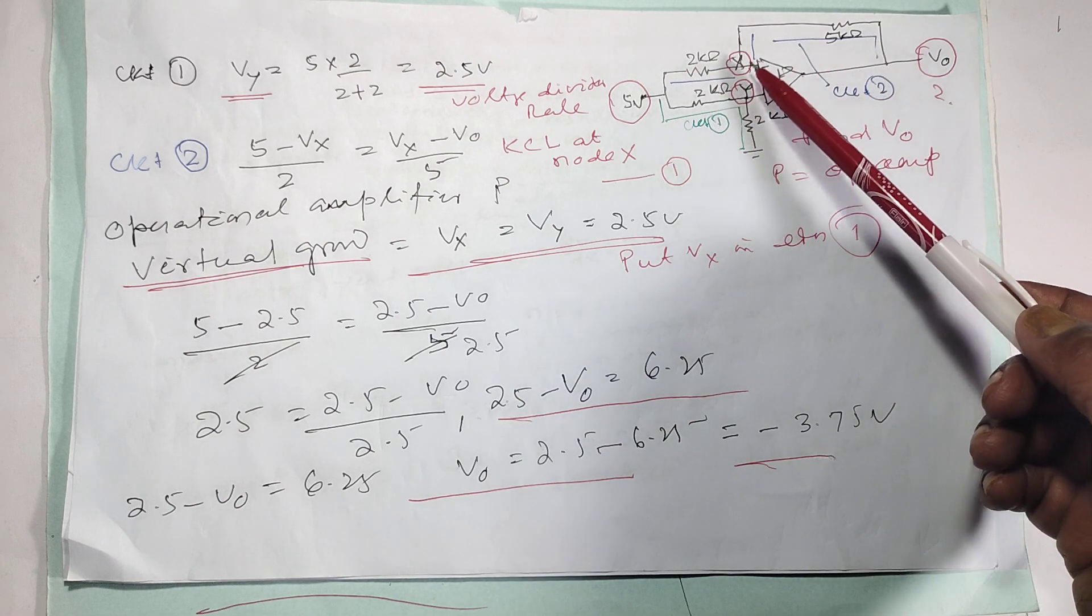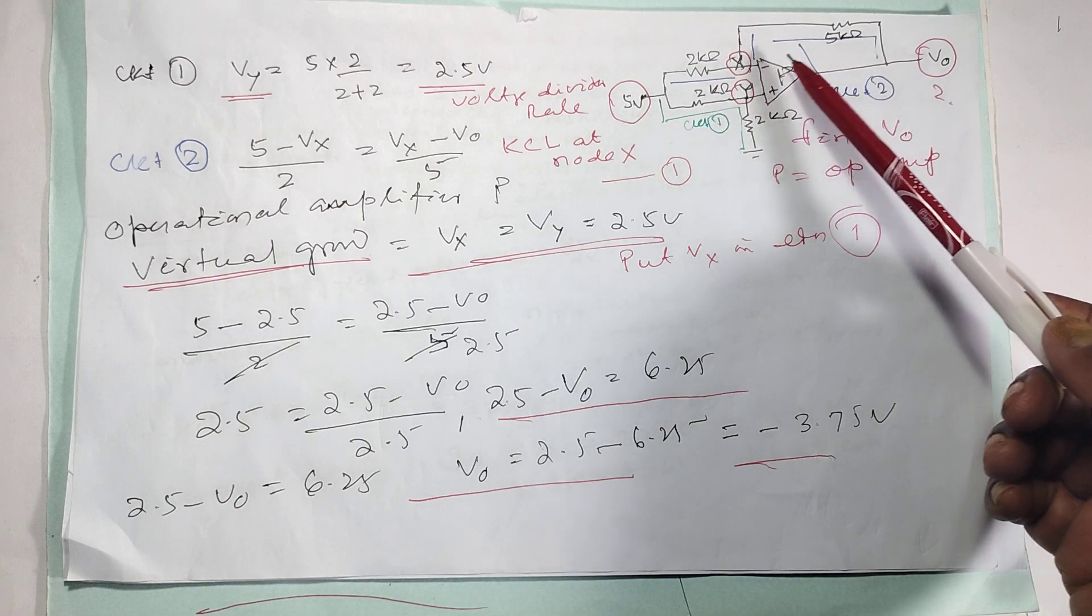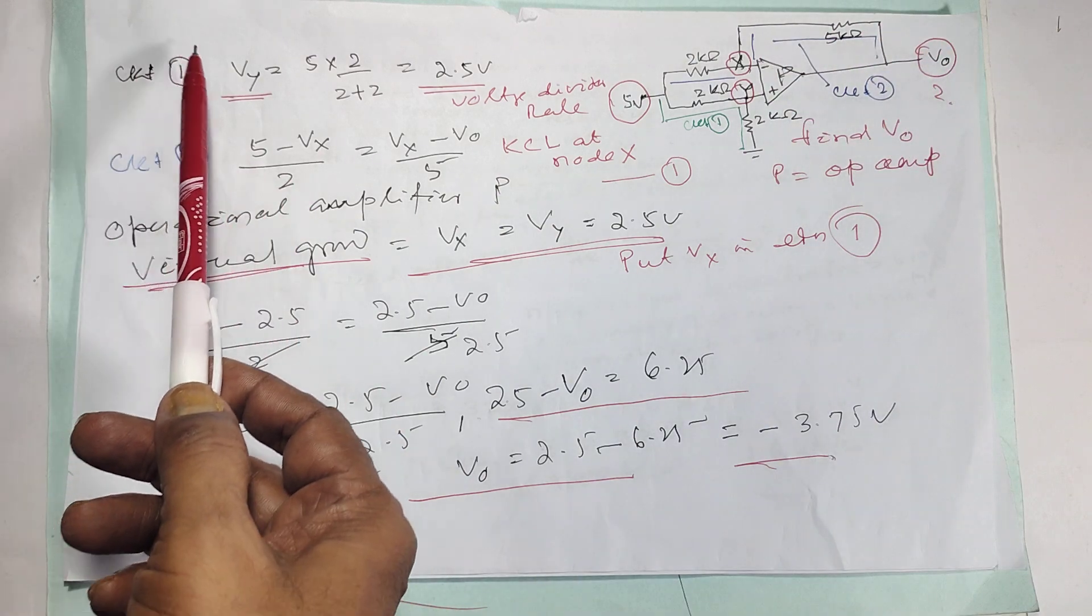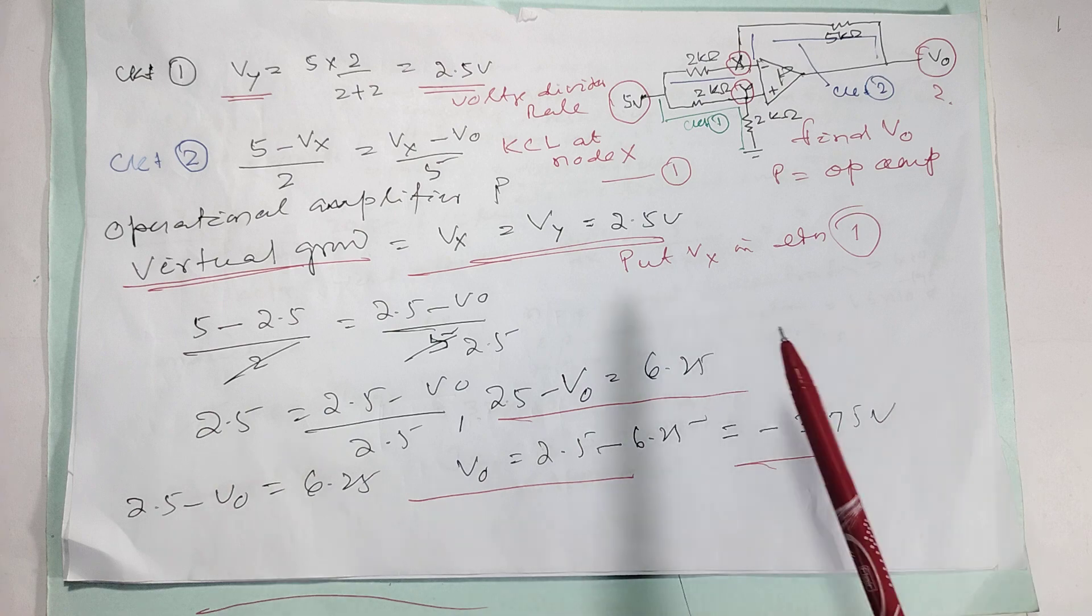Similarly, Kirchhoff's current law applicable to this node X. So automatically this equation will come as per the circuit two. This is for circuit one. But VI is 2.5.